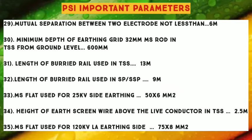Number 31: Length of Buried Rail used in TSS — 13 Meters. Number 32: Length of Buried Rail used in SP and SSP — 9 Meters. Number 33: MS Flat used for 25 KV side earthing — 75 Meters. Number 34: Height of Earth Screen Wire above the live conductor in TSS — 2.5 Meters. Number 35: MS Flat used for 120 KV LA earthing — 75 x 8 sq. mm, 3.5 Meters.